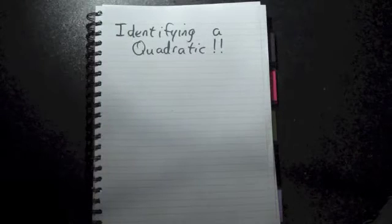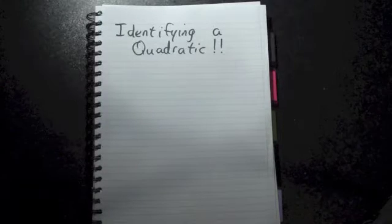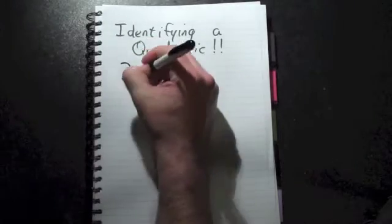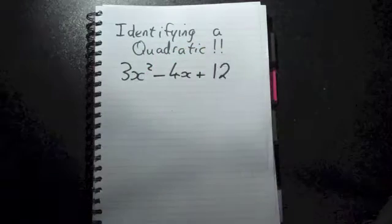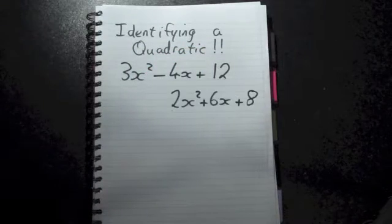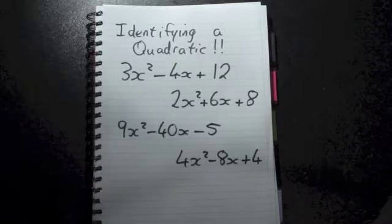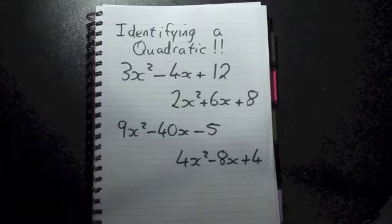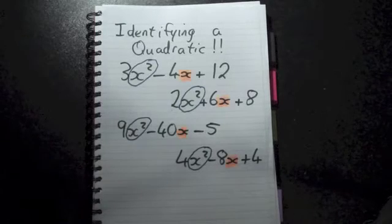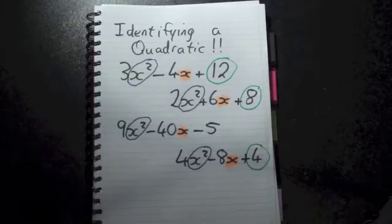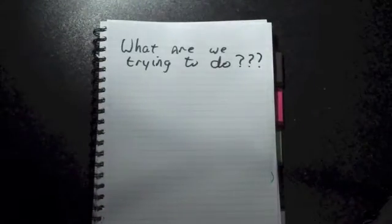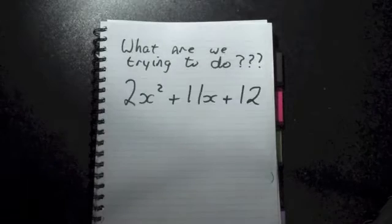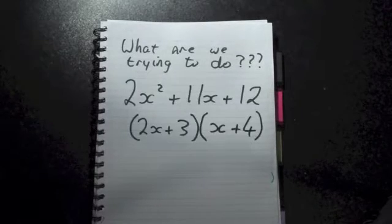So back to quadratics. The first thing we'll do is figure out what a quadratic actually looks like. Here are some examples of quadratic expressions. What do we notice about these expressions? Well, each expression has an x squared, an x, and a number. And what are we trying to do with these quadratics? Like other types of factorizing, we want to turn this expression into factored form.